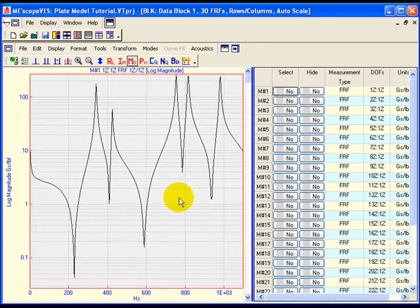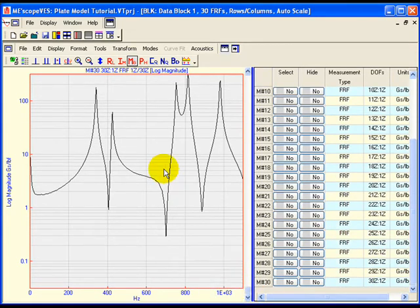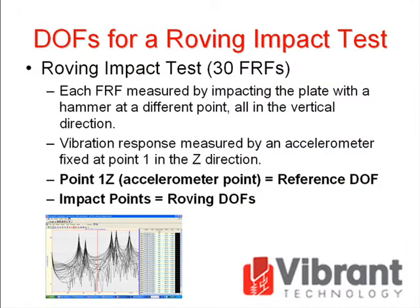Notice on the title bar that there are 30 FRFs in the file. Use the vertical scroll bar on the right of the graphics area to scroll through the FRF measurements. Each of the 30 FRFs in the DataBlock file was measured between a pair of DOFs on a real plate structure. Each FRF was measured by impacting the plate with a hammer at a different point, all in the vertical direction. The vibration response of the plate was measured with an accelerometer fixed at point 1 in the Z direction. Since the accelerometer was fixed at DOF 1Z throughout the test, 1Z is called the reference DOF. The set of 30 FRF measurements was made by impacting at each of the 30 points in the vertical or Z direction. Since each impact point had a different DOF, these DOFs are called roving DOFs. This type of modal test is very common and is called a roving impact test.